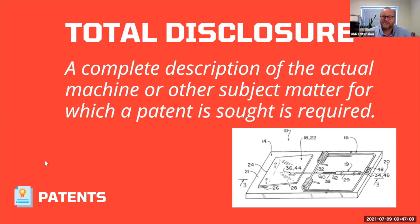A patent only grants you the right to exclude others from doing the same thing for 20 years; after that, the patent expires and goes into the public domain — people can copy it. Pharmaceutical products are a prime example: Aleve contains naproxen sodium, and once its patent expired after 20 years, generic naproxen sodium became available. Ibuprofen was once only known as Advil, but once that patent expired, anyone could produce it because the chemical formula was fully disclosed. That's the trade-off — you disclose absolutely everything about what it's made of and how it works, so that anyone can eventually reproduce it.